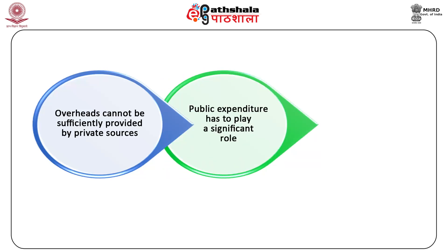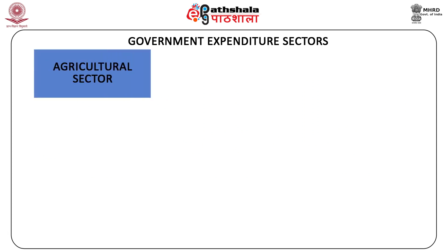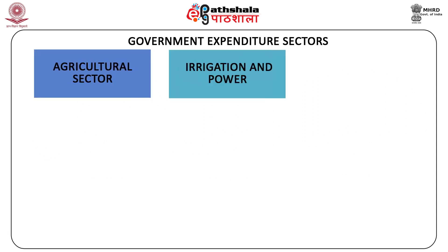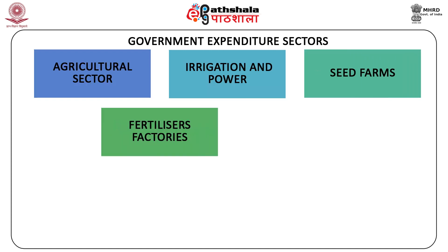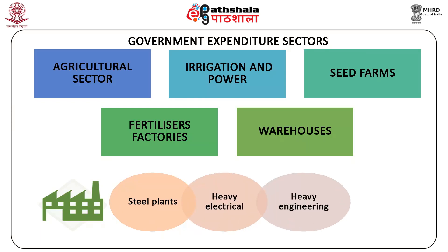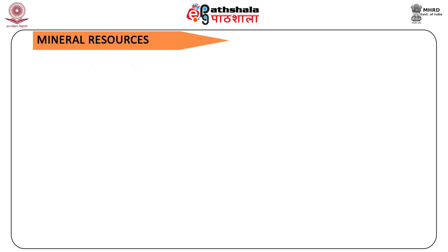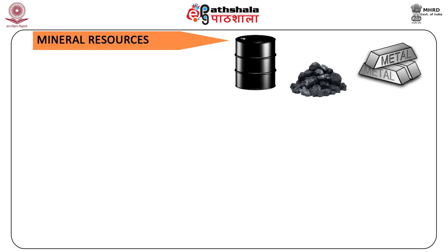Public expenditure has to play a significant role in building up the economic and social overheads. Government needs to incur expenditure in the agricultural sector on irrigation and power, seed farms, fertilizer factories, warehouses, etc., and in the industrial sector by setting up public enterprises like steel plants, heavy electrical, heavy engineering, machine-making factories, etc. Public expenditure also has to play a pivotal role in the exploration and development of mineral resources such as petroleum, coal, metals, etc.